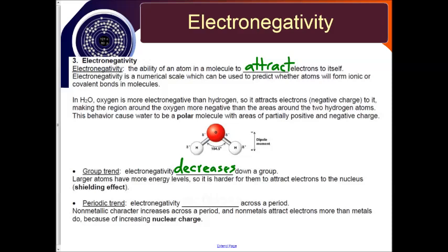The periodic trend: electronegativity increases across a period. Non-metallic character will increase across a period, and non-metals attract electrons more than metals do because of increasing nuclear charge.